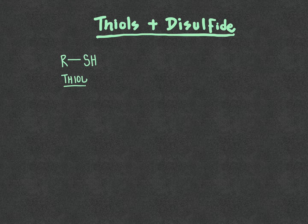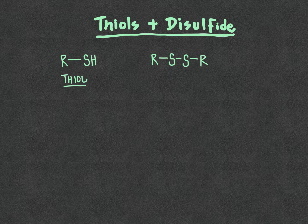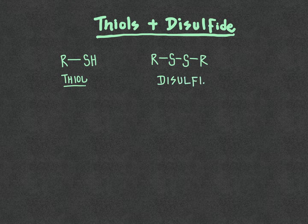An additional functional group, one that we haven't covered thus far in our standard list of functional groups, refers to a structure where we have a sulfur-sulfur bond. We refer to this sulfur-sulfur bond as a disulfide, where the R groups are carbon or carbons connected there. Di referring to two, and the sulf referring to the fact that these are two sulfur atoms that are connected together.